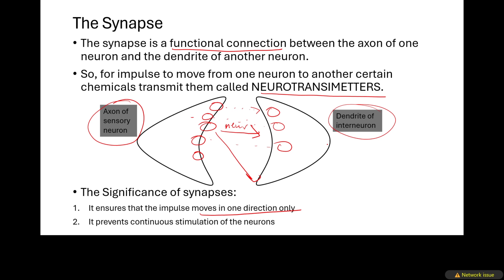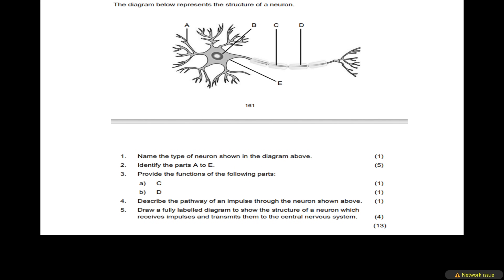The significance of synapses: they ensure that impulses move in one direction only. Impulses won't move the other way or get lost — the message will move all the way from the receptor through the synapse across the three neurons, and when they reach the effector muscle the effector will respond based on the stimulus. For example, when it is hot you sweat — the effector is the sweat gland, and when it is hot the brain transfers the message to the sweat gland so you start sweating and feel cool.